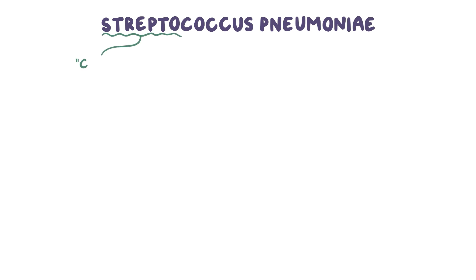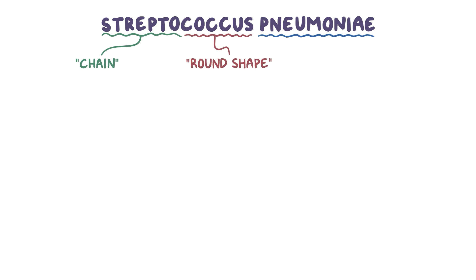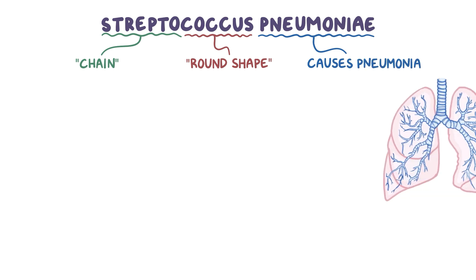Streptococcus pneumoniae, or strep pneumoniae, can be broken down into strepto, which means chain, coccus, which means round shape, and pneumoniae, which refers to the fact that it causes pneumonia. No surprises there.